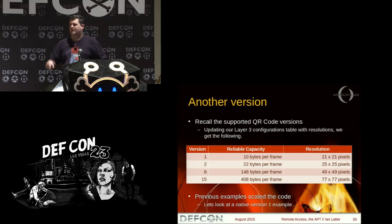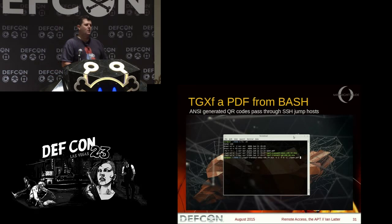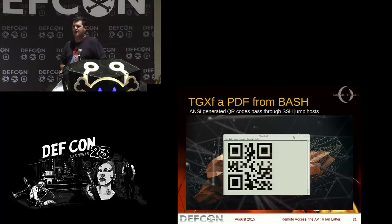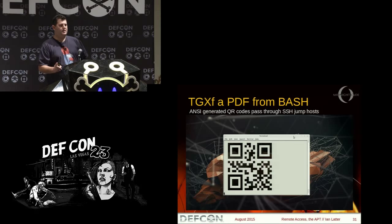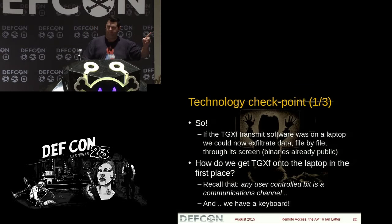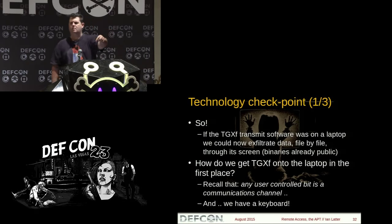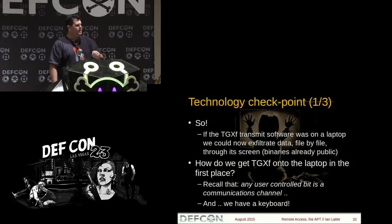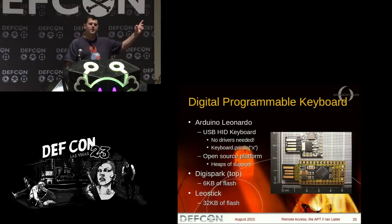Why did I pick that ridiculously low QR code version one? It's a native resolution of 21 by 21 pixels — we know that an 80 by 25 terminal will contain a 21 by 21 QR code. What you're looking at is the same program outputting a QR code flow using just the space character with ANSI codes for white on black and black on white. That's important when we get to the architecture. At this point, if transmit software was on my laptop here at the podium, I'd be able to exfiltrate any file to a device you can't see — a camera in my hand. But how did I get that transmit software onto the laptop in the first place?